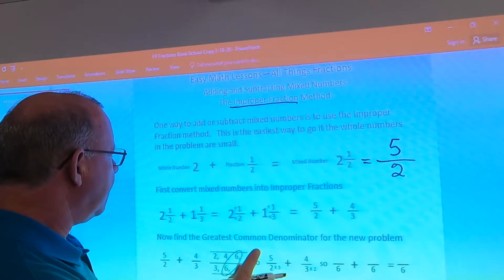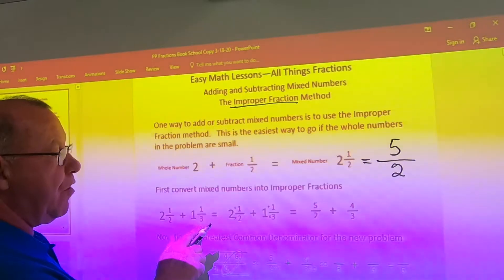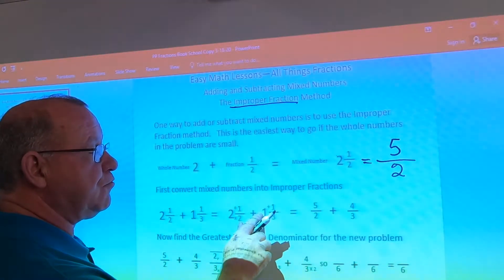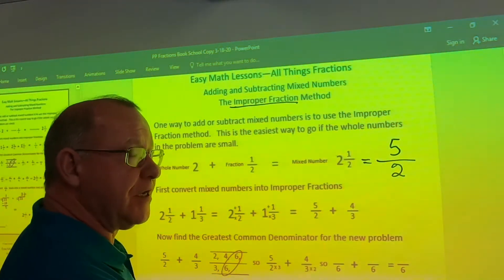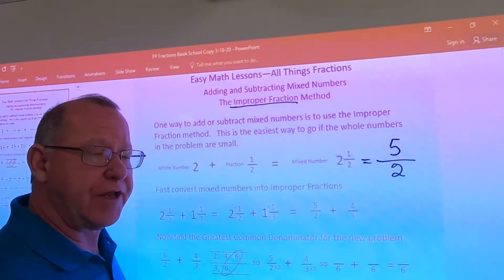Now, so that we know that two and one half is equal to five halves, we can take one and one third and we convert it into an improper fraction by multiplying three times one would be three plus one is four, so that gives us four thirds. Now, we just use our method for adding and subtracting fractions with unlike denominators.